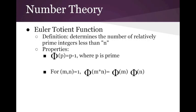There are a few properties that go along with this function. For example, phi of p, where p is prime, is always equal to p minus 1. And for m and n relatively prime, the phi of their product is also equal to the phi of m times the phi of n.